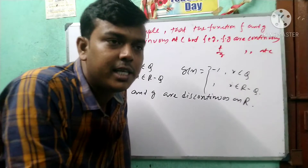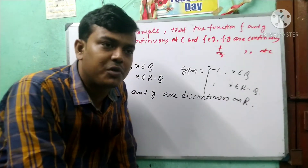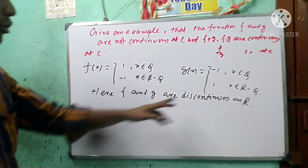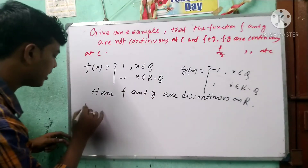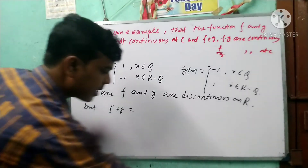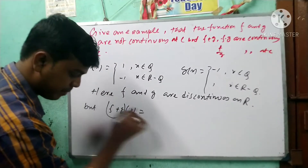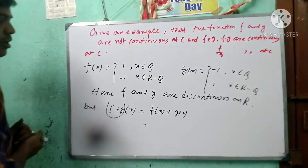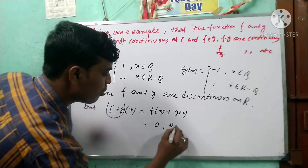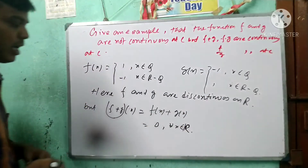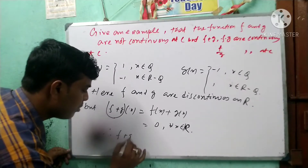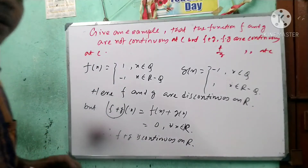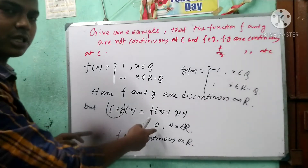This is the Dirichlet function. The Dirichlet function is discontinuous — both F and G defined this way are discontinuous everywhere.